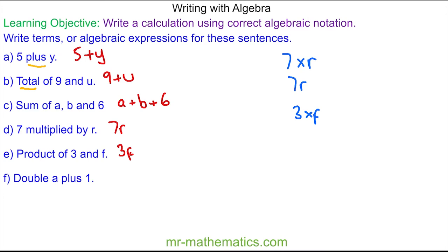With the order of operations, we do the multiplication first, so we have double a, which is a multiplied by 2, and then we are adding the 1. We drop the times and always write the number before the letter, so 2a plus 1.